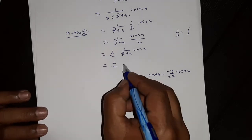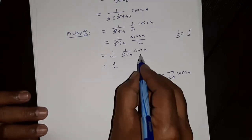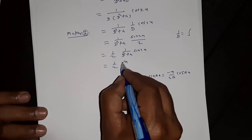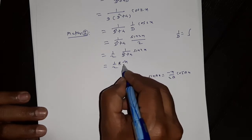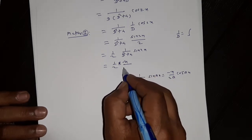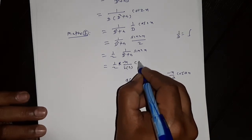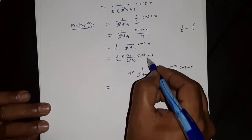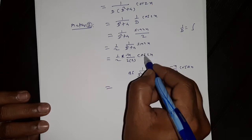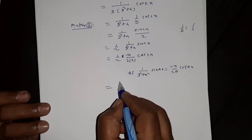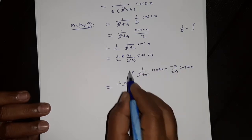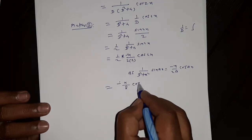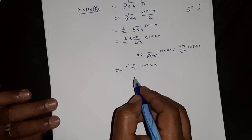With a = 2, we apply the rule 1/(D² + a²) · sin(ax) = -x/(2a) · cos(ax). So we have (1/2) · (-x/(2·2)) · cos(2x), where sin(2x) is replaced by cos(2x). This gives -x/8 · cos(2x). Therefore the particular integral by Method 1 is y_p = -x/8 · cos(2x).